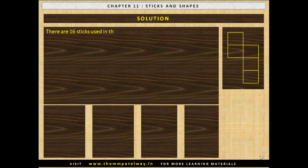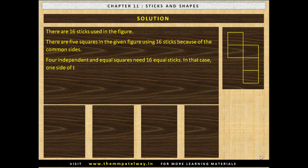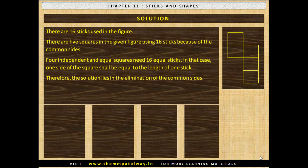There are 16 sticks used in the figure. There are 5 squares in the given figure using 16 sticks because of the common sides. Four independent and equal squares need 16 equal sticks. In that case, one side of the square shall be equal to the length of one stick. Therefore, the solution lies in the elimination of the common sides.